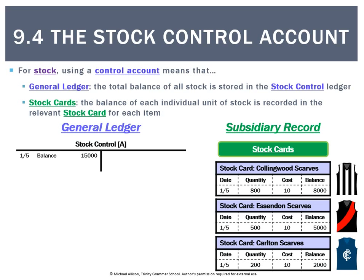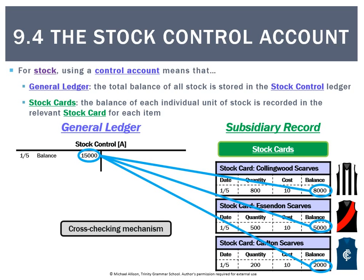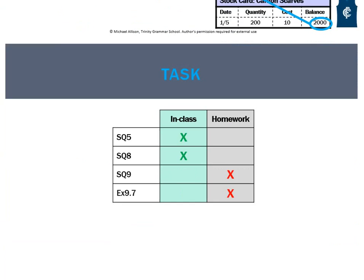Just like the debtors subsidiary records must equal the debtors control account, the stock control account balance of $15,000 must equal the combined balances of all the subsidiary stock cards. This acts as a cross-checking mechanism to make sure everything is free from error.